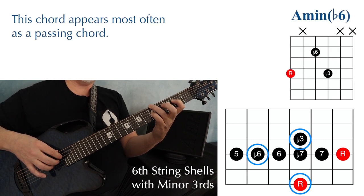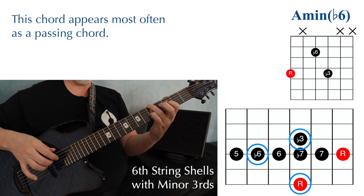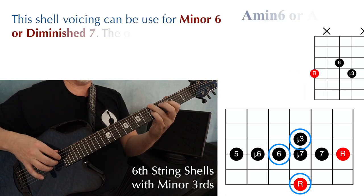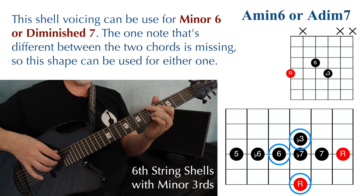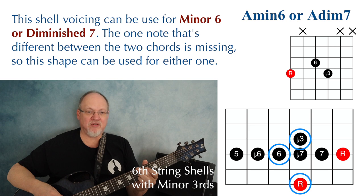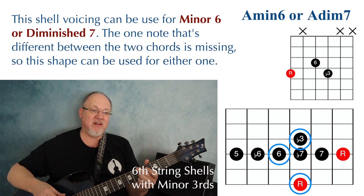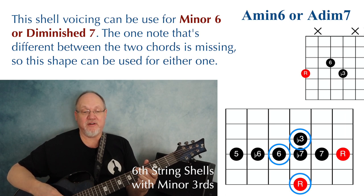Changing that note to the flat six gives a minor flat six chord. Moving it again gives a minor six chord. Depending on the musical context, this can be called A minor six or A diminished seven — the theory explanation will be saved for a future video.